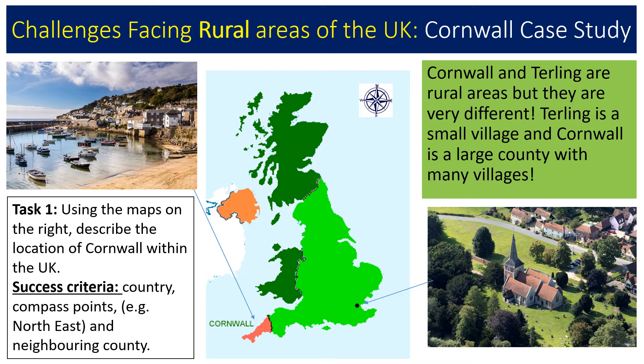For Task 1, which you will submit to your teacher, describe the location of Cornwall within the UK. Think about which country it's in, the compass points — is it north east, south east, south west, or north west — and try to find out what the neighbouring county is. Pause the video now and answer that question.